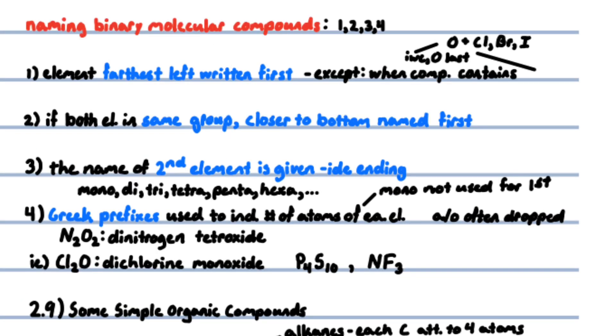The procedure used for naming binary or two-element molecular compounds: one, the name of the element farthest to the left in the periodic table is usually written first—an exception occurs when the compound contains oxygen and any halogen except fluorine, in which case oxygen is written last. Two, if both elements are in the same group, the one closer to the bottom is written first. Three, the name of the second element is given an -ide ending.